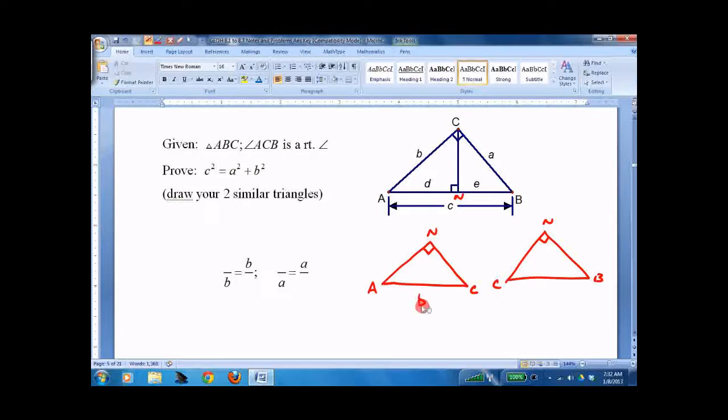And we've got to label the sides. A, C is B, and B, C is A. I know I've got capital and lowercase letters, but it's just the way I do it. And the distance from B to N is E. And the distance from A to N is D.